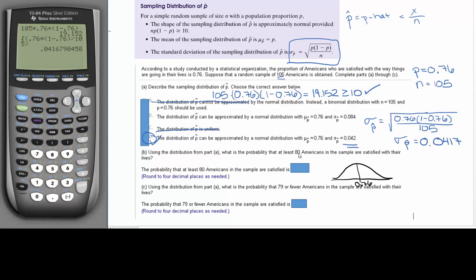Well, the reason is because we have to convert this 80 into a p-hat. So that is saying that we have 80 Americans out of our sample of 105. And so p-hat is just going to be 80 divided by 105, which is going to give us 0.7619.